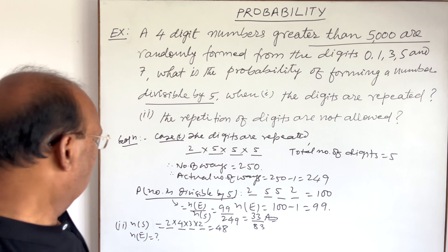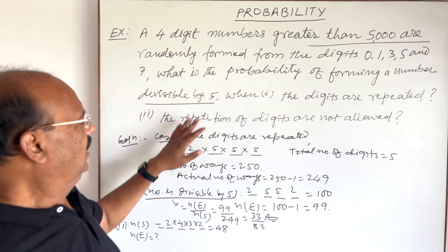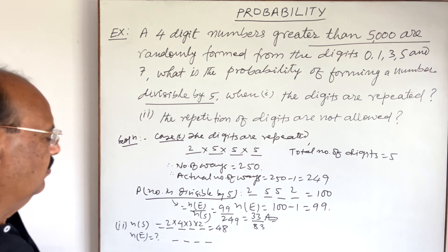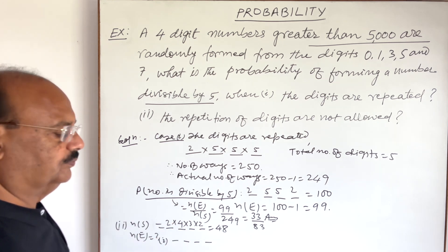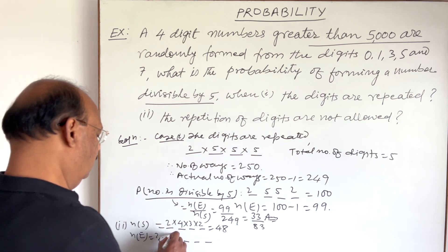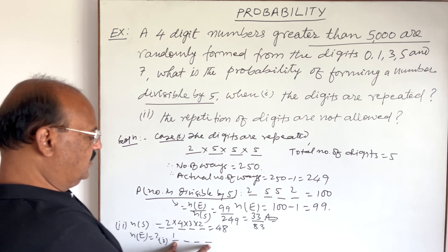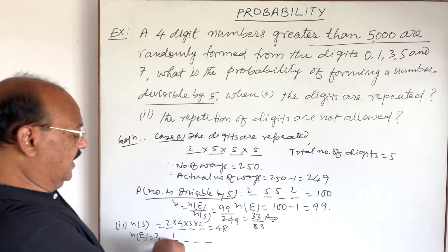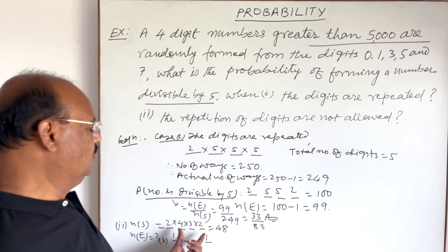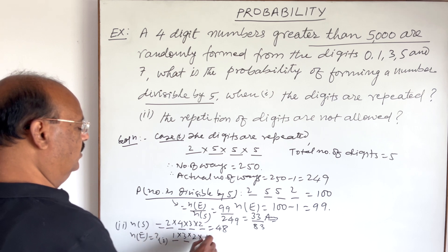Now we find n(E) — numbers greater than 5000, divisible by 5, with no digit repetition. There are two sub-cases. Sub-case one: thousands place is filled with 5. Since 5 is already used, the units place can only be 0 for divisibility by 5. Two digits (5 and 0) are now used, so the hundreds place has 3 remaining options and the tens place has 2, giving 1 × 1 × 3 × 2 = 6.